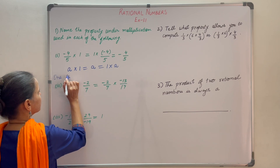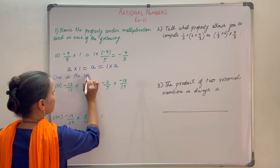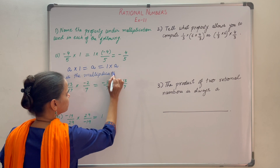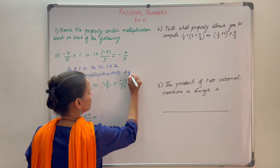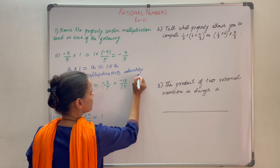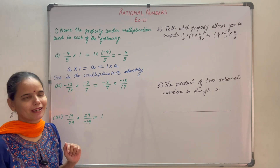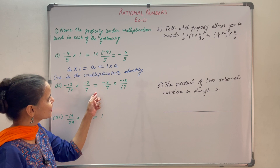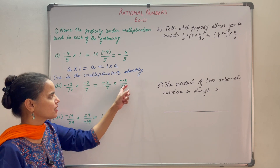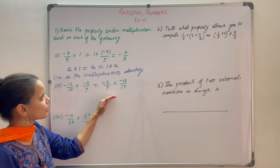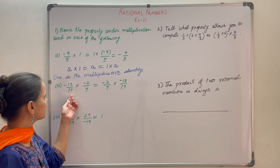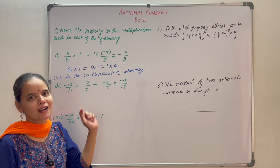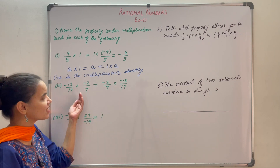So the property used here is: 1 is the multiplicative identity. Now let us discuss the second part. Here it is minus 13 by 17 into minus 2 by 7 is equal to minus 2 by 7 into minus 13 by 17. You can see on both sides the same numbers are used — minus 13 by 17 and minus 2 by 7 — but the order is changed.